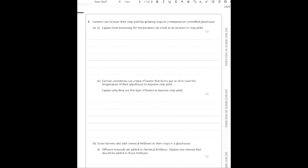For the previous graph question, I recommend checking the mark scheme linked in the description for anything you're unclear on. Next question: farmers can increase crop yield by growing crops in a temperature-controlled greenhouse. Explain how increasing the temperature can result in an increase in crop yield.